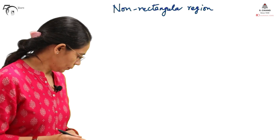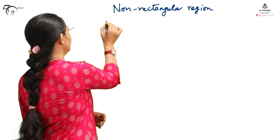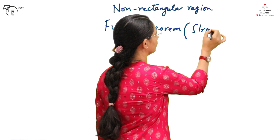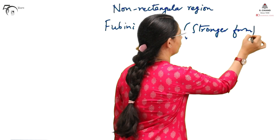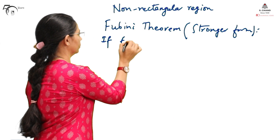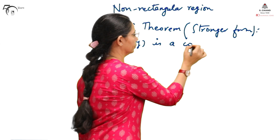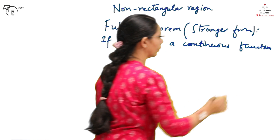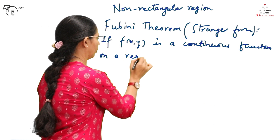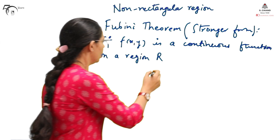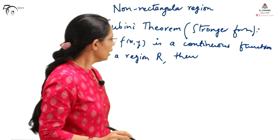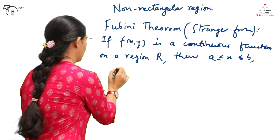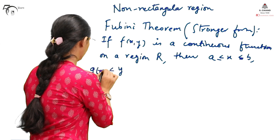For this, we will go through the stronger form of Fubini's theorem. It states that if f(x, y) is a continuous function on a region R, where R is a non-rectangular region, then — let's say the limits for x are A and B, and the limits for y are in the form of G1(x) and G2(x).